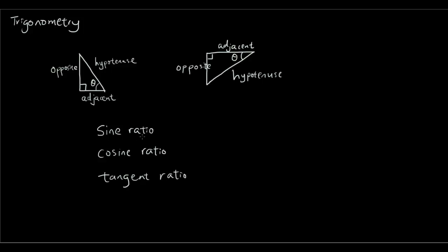Now what is a ratio? A ratio is simply one quantity divided by another quantity. And the sine ratio is the opposite side, the length of the opposite side divided by the hypotenuse side.